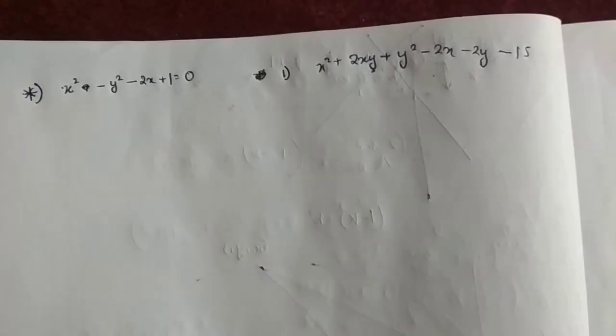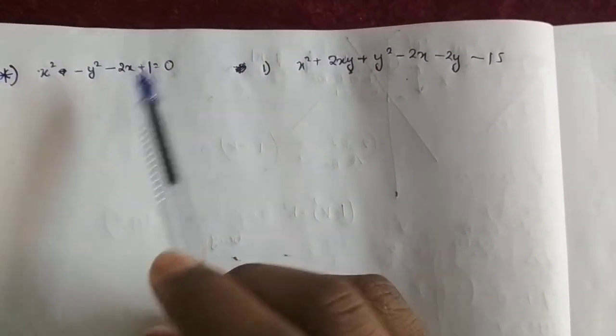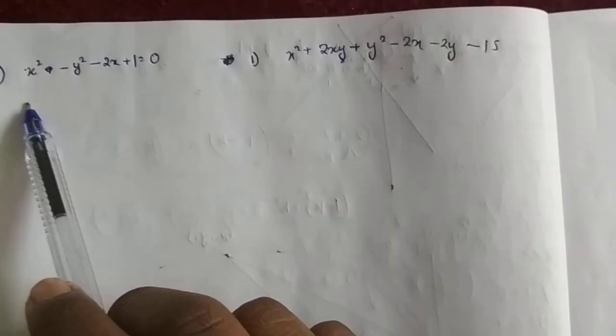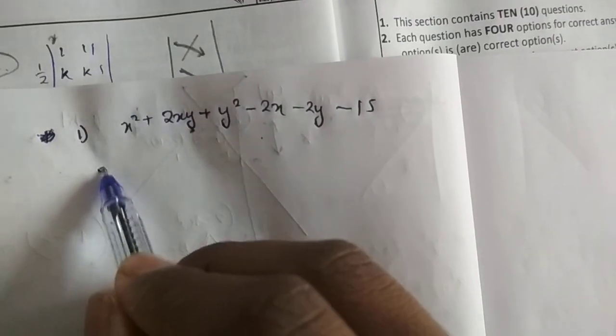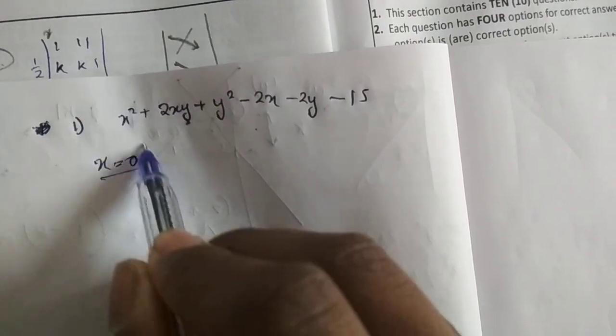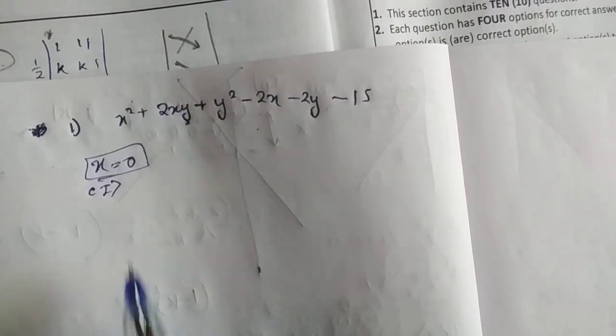This other one is pretty hard if you do it in my method, but I will still show you. First, we put x equals to 0. Let's suppose this is case 1.